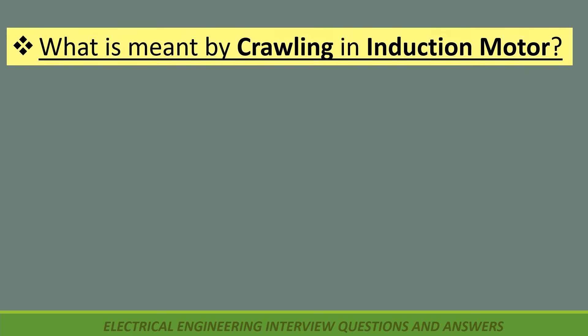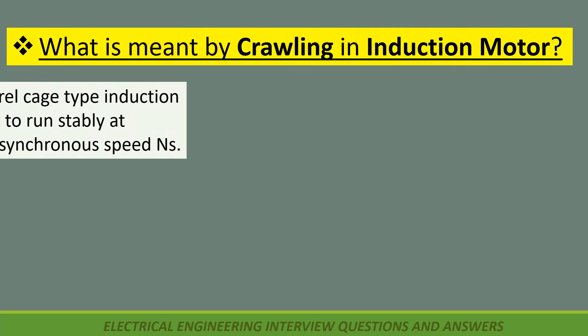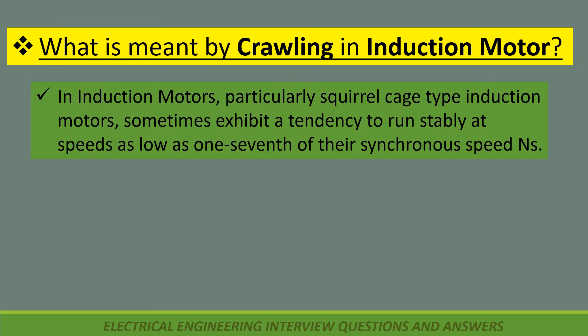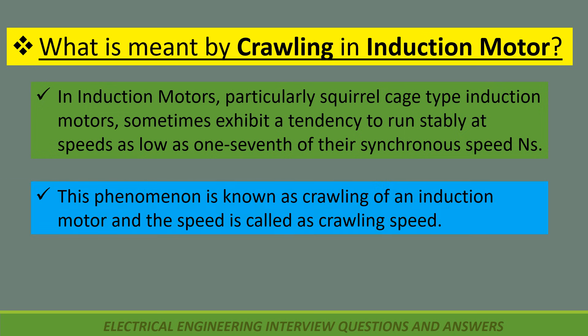What is meant by crawling in induction motor? In induction motors, particularly squirrel cage type, they sometimes exhibit a tendency to run stably at speeds as low as 1/7th of their synchronous speed. This phenomenon is known as crawling of an induction motor, and the speed is called the crawling speed.